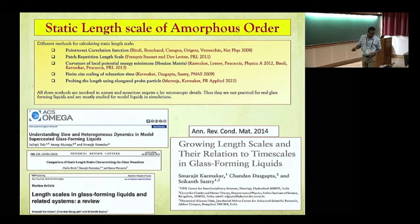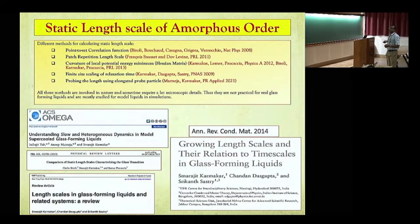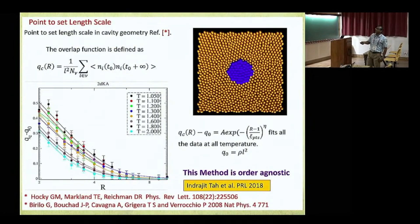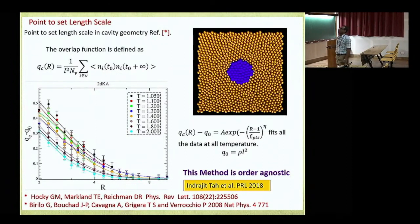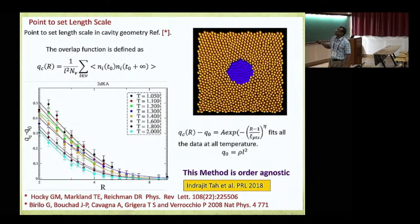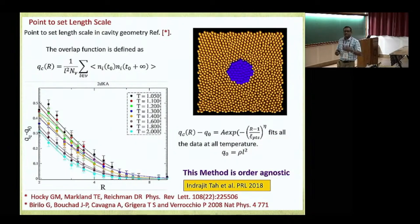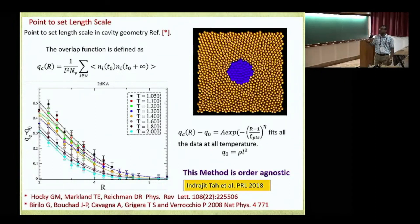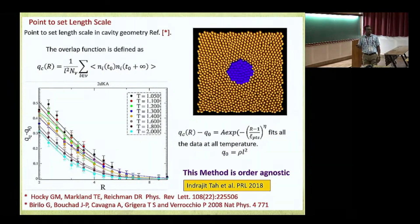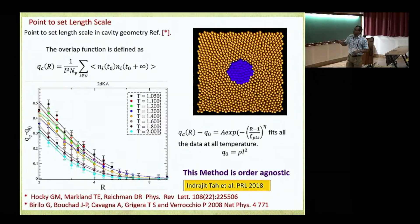We recently came up with an interesting way to compute this length scale using an elongated probe particle. To briefly describe the point-to-set length scale: you take a configuration, freeze some part of it leaving only a small dynamic region, and ask whether this dynamic region will be able to decorrelate by itself. The size of the region where decorrelation happens gives you the static correlation. This is not easy to do and has a lot of technical challenges. Obviously this cannot be done in molecular glass experiments — you cannot freeze certain particles and look for only local regions.